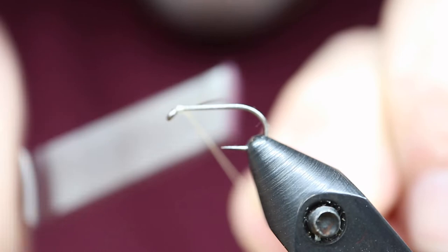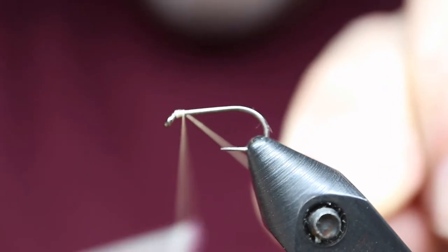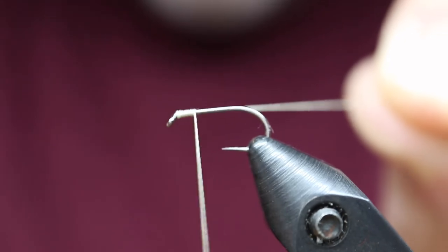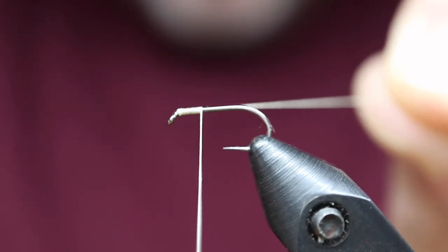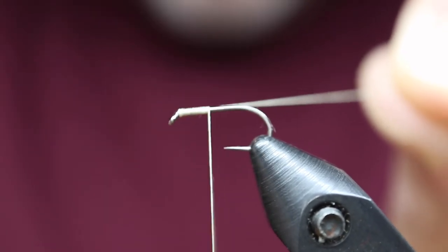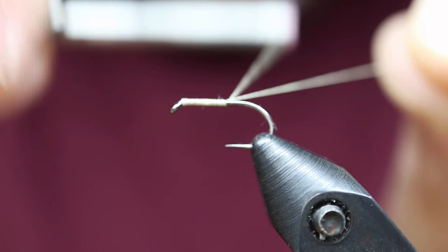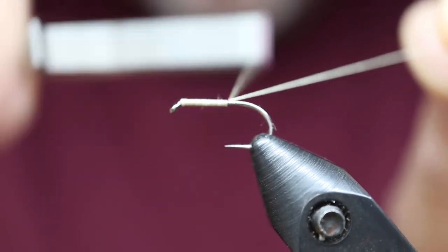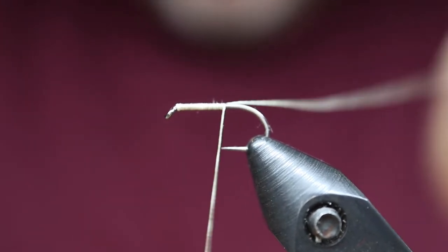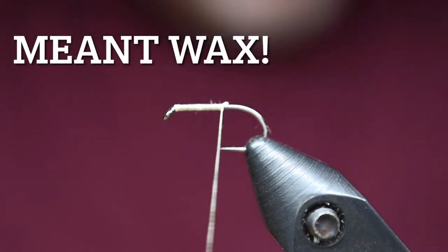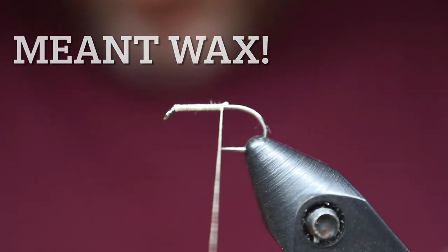I'm going to start the silk right behind the eye, using the tag end to help create touching turns down the shank. There is no wax on the silk here with a modern-eyed hook, and what's in this pattern, there's really no need for it. I go down to about the point of the hook and cut that tag off.